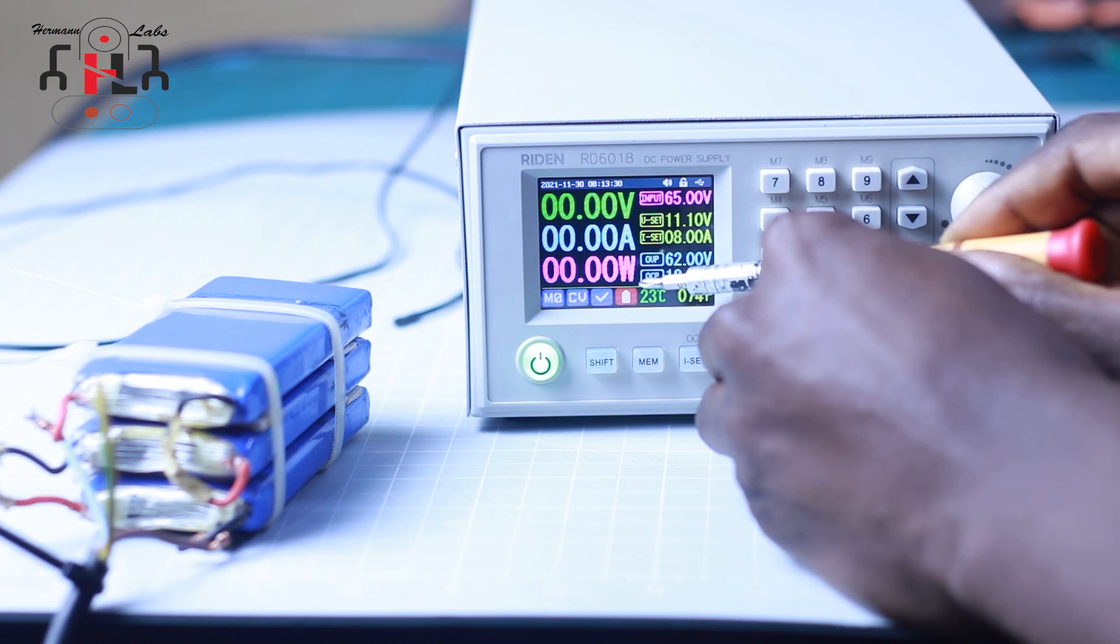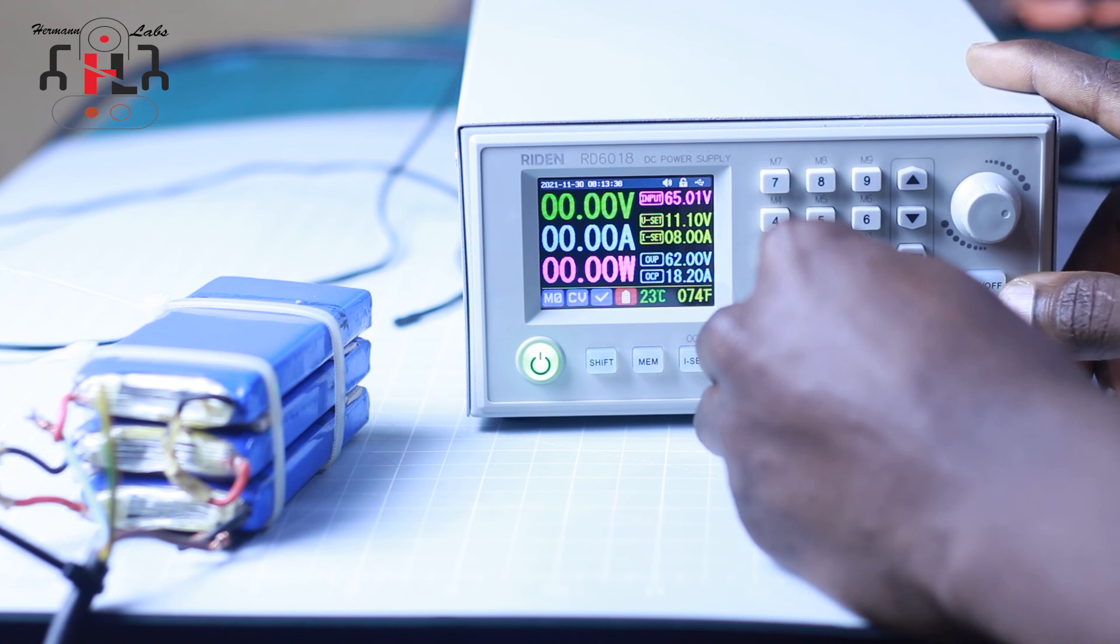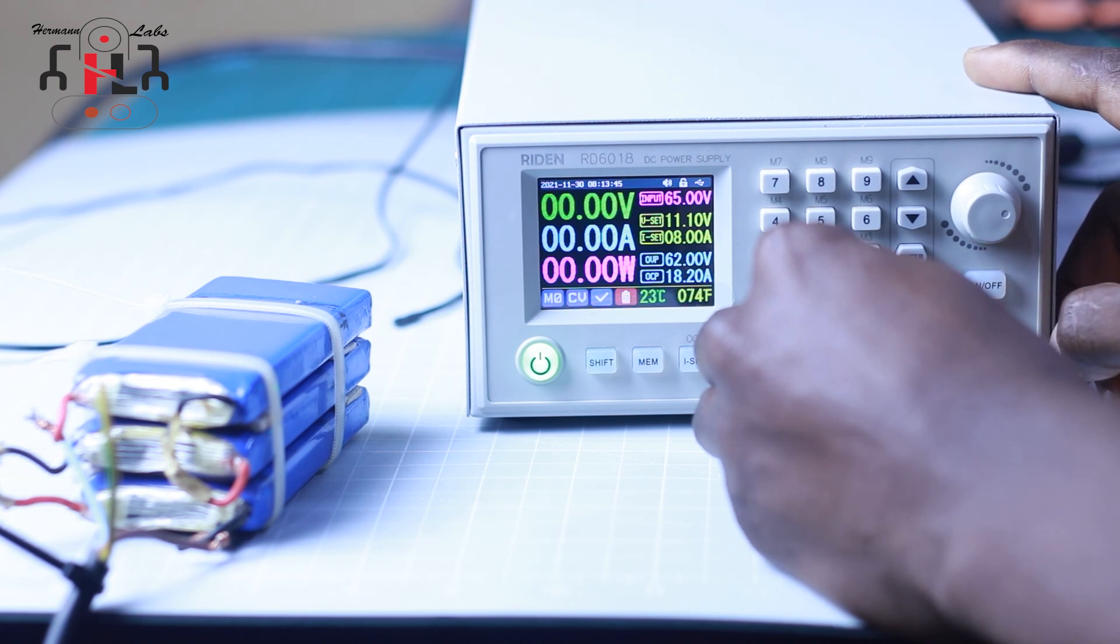So you see that the battery terminal turned red because I reversed the polarities of the battery to the power supply. And now when we press on the button ON, it goes off because it cannot charge at this stage.